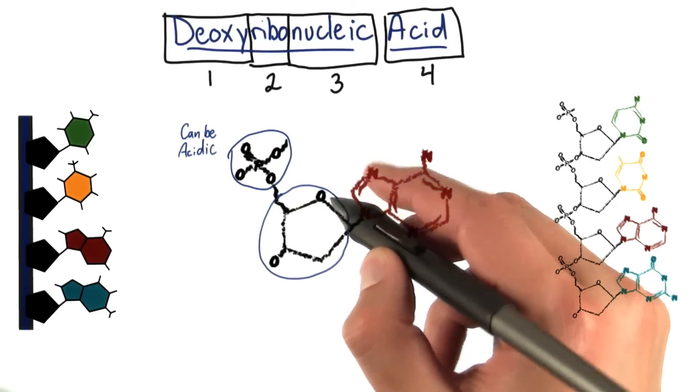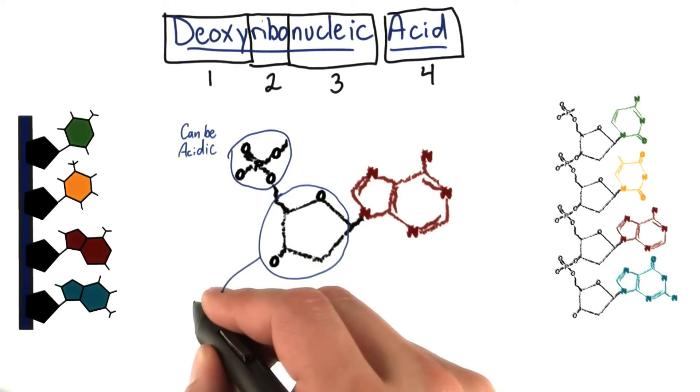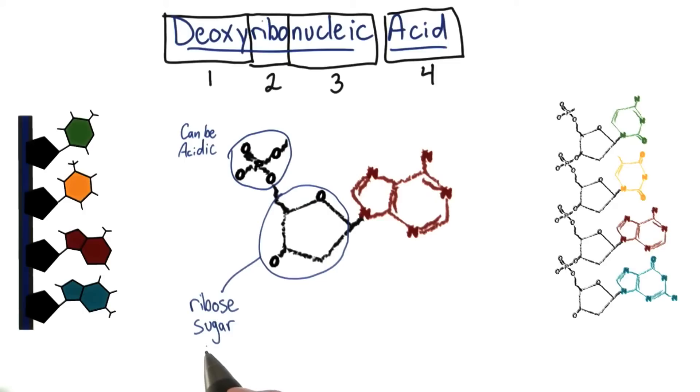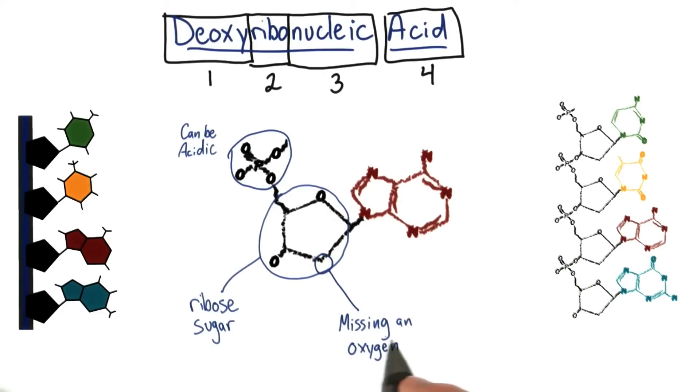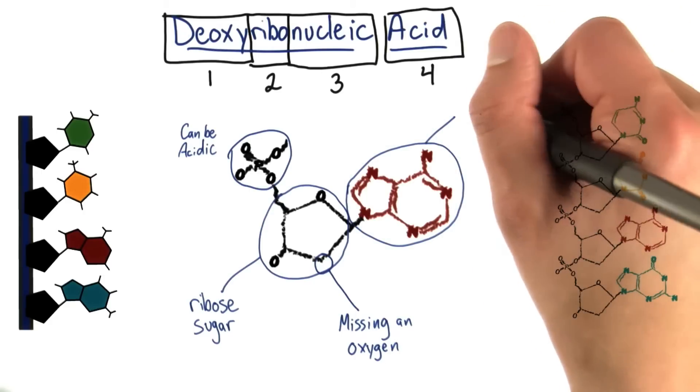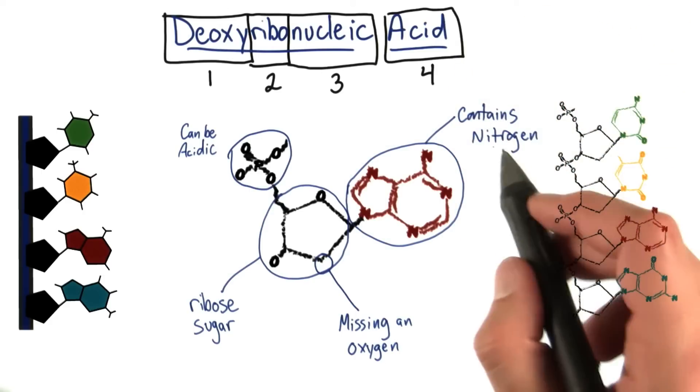This part of the molecule here is called a ribose sugar. I don't know if you know this or not, but sugars are also molecules. This part of the sugar right here is actually missing an oxygen atom. And the nitrogenous base structure we've already mentioned contains nitrogen.